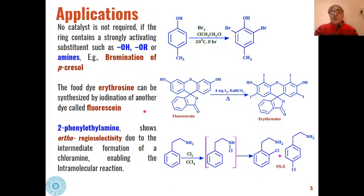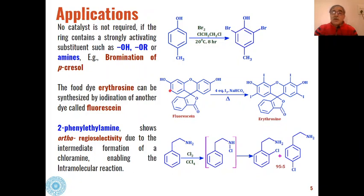Electrophilic aromatic substitution is also used for the conversion of different types of dyes. For example, the food dye erythrosine can be synthesized by iodination of the dye known as fluorescein. Iodination takes place at the ortho positions relative to the phenol groups, similar to the bromination example seen previously, since the substrate contains phenolic components.